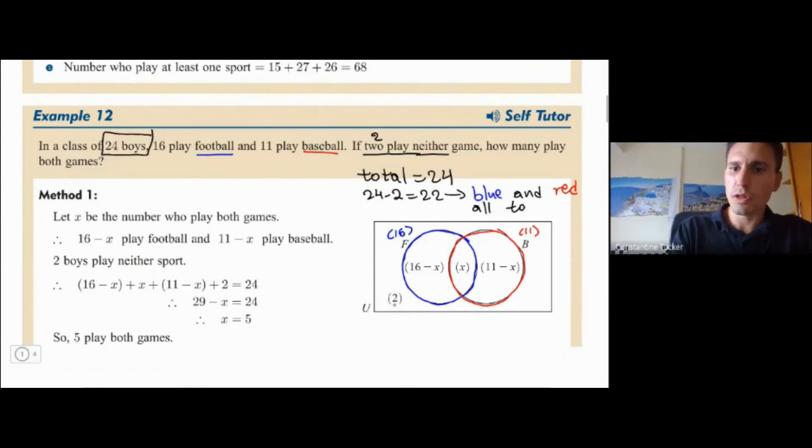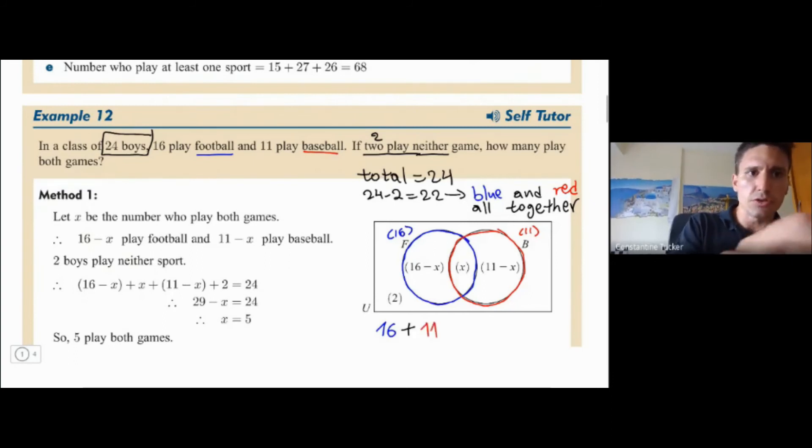But notice what's happening here. They've told us that all of blue is 16 and all of the red is 11. So if we add these up, if you do 16, and then you add 11, then what do you get if you add these two? Well, we get 27.